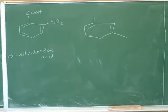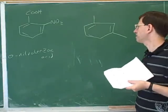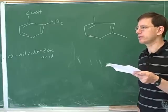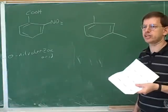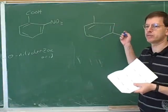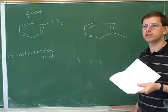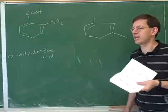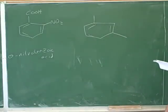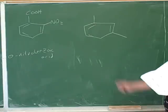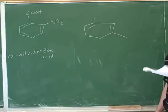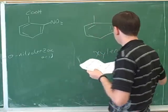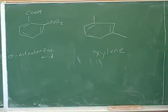It would be possible to give an IUPAC name for this, but it turns out this is another compound that simply has a common name from history. Previously, we only learned about common names for single substituents, but there's actually a common name for two methyl substituents. What do we call a benzene with a single methyl substituent? Toluene. A benzene with a single methyl substituent is called toluene. Well, it turns out there's a special name for a benzene with two methyl substituents, which is called xylene.